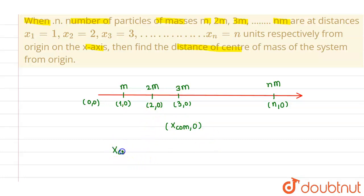So let us try to find out the x-coordinate of center of mass. This will be given by mass into its distance from origin, similarly second mass into its distance from origin, plus third mass into distance from origin, and so on till the last mass which is nm into its distance from origin which is n, divided by total mass which is given by m plus 2m plus 3m up to nm.